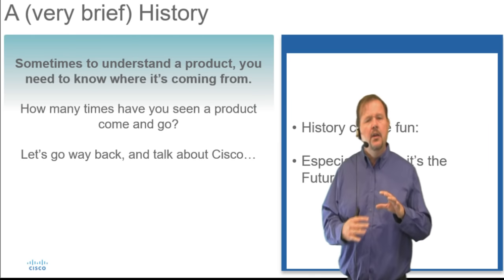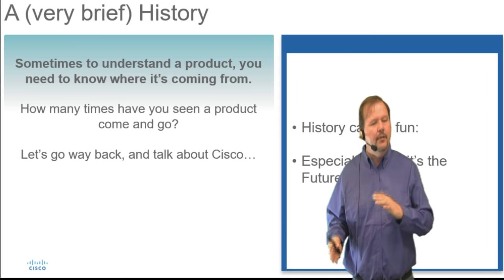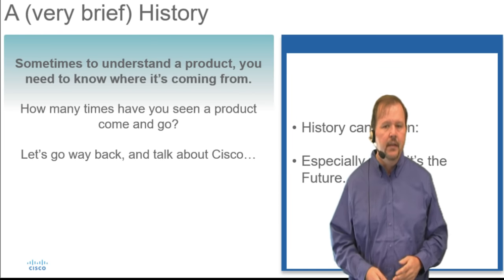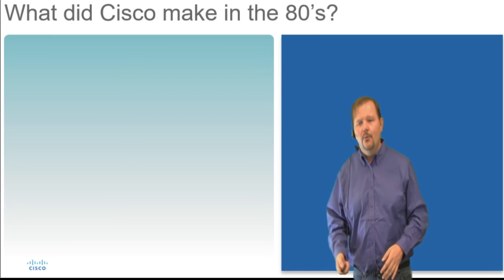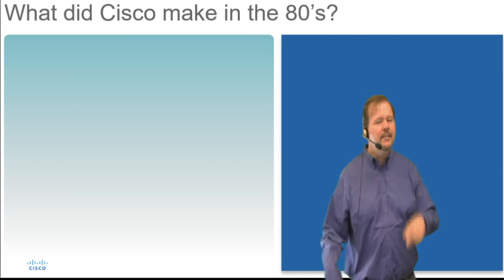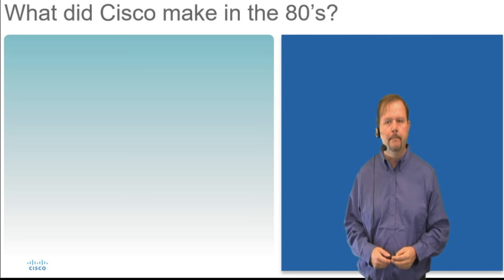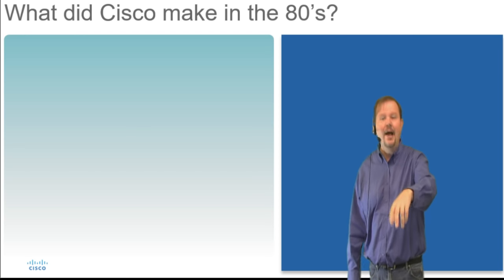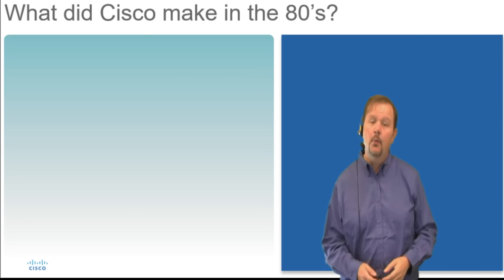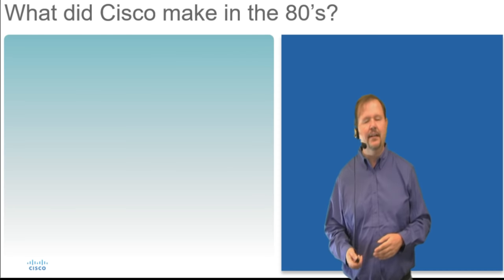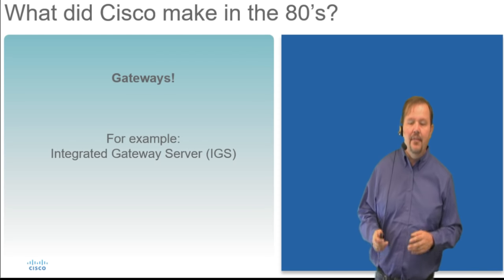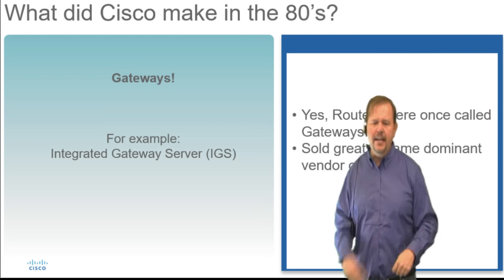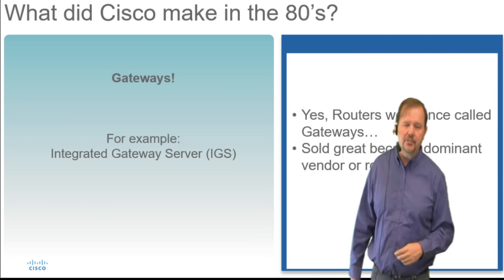We're going to spend a little bit of time on the history. We're going back to the 80s. What did Cisco make in the 80s? Routers — but we didn't even call them routers anymore. We called them gateways: the AGS, IGS, CGS — Advanced, Compact, Intermediate Gateway Systems. That's what we made, and we did incredibly well. You'd go through the data center and you would see routers everywhere. Cisco just crushed in the router market.